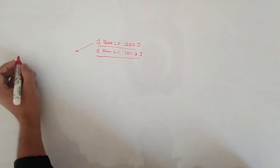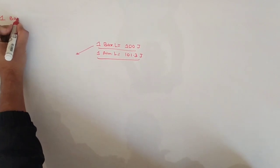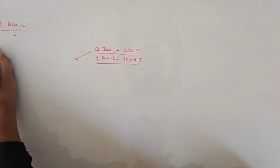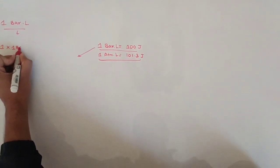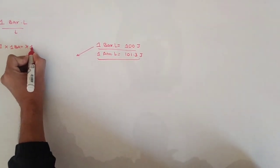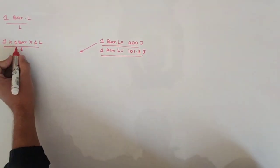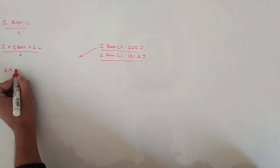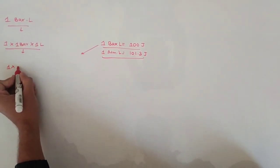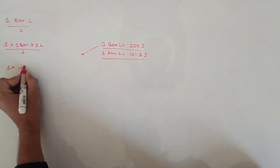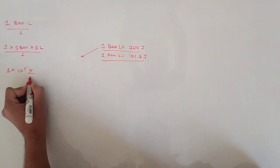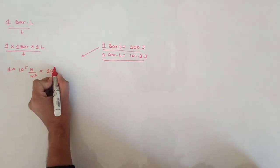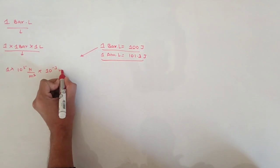First, we will look at 1 bar·litre. Breaking it down into 1 bar multiplied by 1 litre, we substitute the known values: 1 bar equals 10⁵ Newton per meter squared, and 1 litre equals 10⁻³ meter cubed.